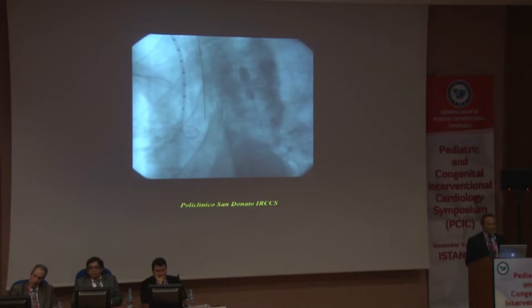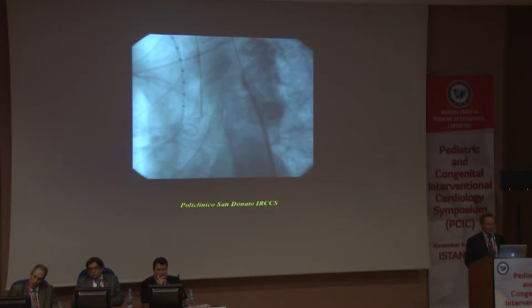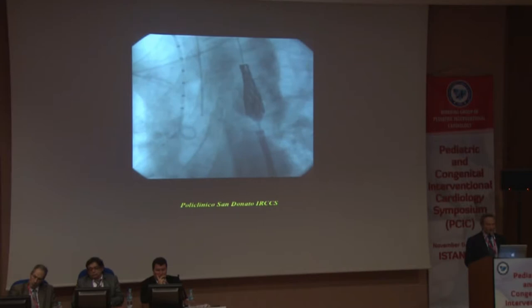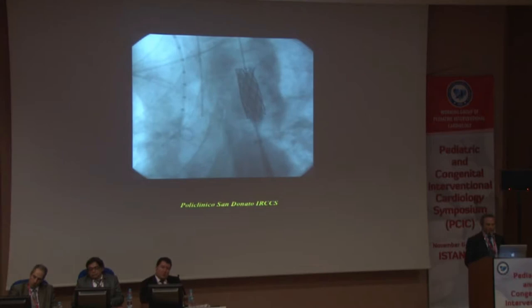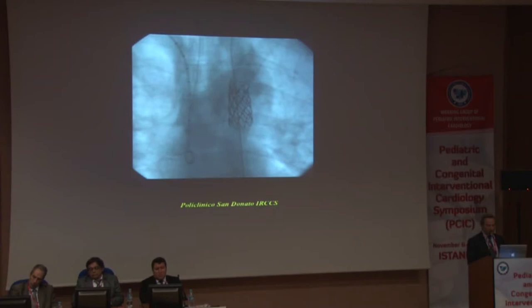We converted from a complete interruption to a near-interrupted segment, expanded with a small balloon to allow passage of a Mullins sheath across the coarctation, and eventually implanted a cover stent. The immediate result showed no gradient and no extravasation, allowing us to further expand the stent to nominal size — achieving complete recanalization of the vessel with no gradient and no complication.